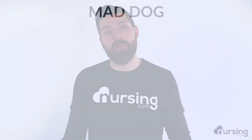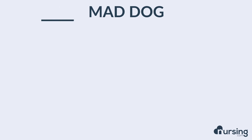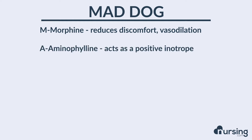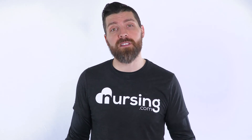When we're dealing with a patient with pulmonary edema, we use the mnemonic MAD DOG. M stands for morphine — we use morphine because it helps to reduce discomfort and it helps to vasodilate. A stands for Aminophylline, which acts as a positive inotrope, helping to improve the contractility of the heart so it gets more fluid out to the system.